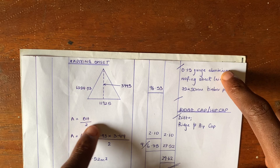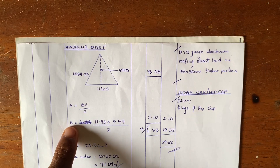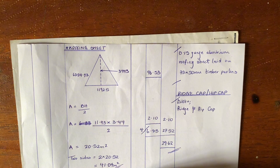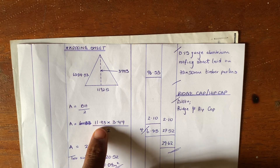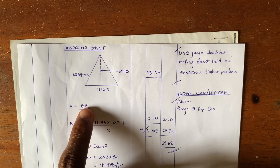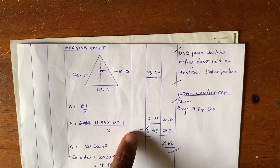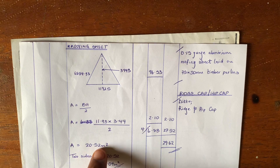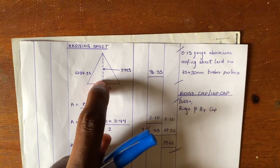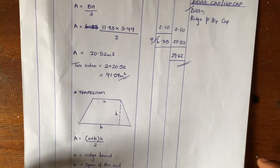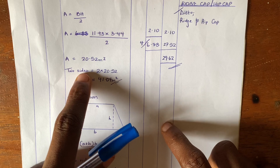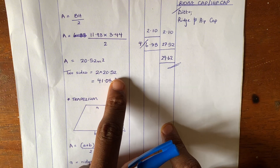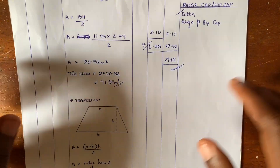The area formula is base times height divided by two. The base is 11,925mm, converted to meters that's 11.925m, multiplied by the height of 3.44m, divided by two. The area equals 20.152 m². This is the area of the triangle for one side. Since there are two triangles, we multiply by two: 2 × 20.152 = 41.404 m². That gives us the area of the two triangles on the roof.